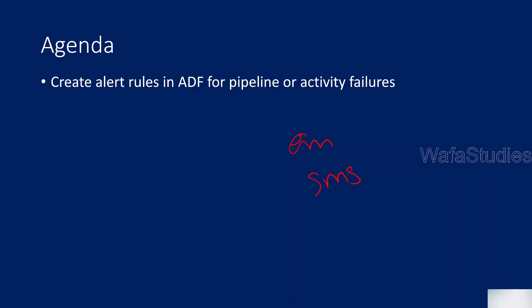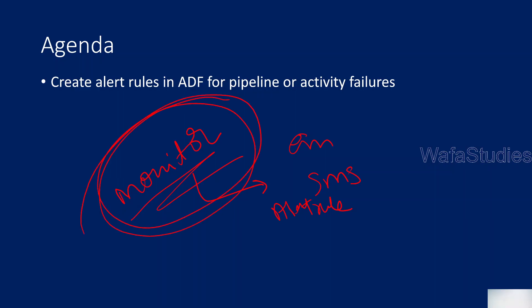How that mechanism works behind the scenes is because of Azure Monitor. Whatever alert rule you create inside Data Factory is the same alert rule you create in Azure Monitor. In Azure Monitor there is also something called alert rules using which you can configure alerts for any service. For ADF, instead of navigating to Azure Monitor and configuring the alert rules there, you can directly configure from Data Factory.